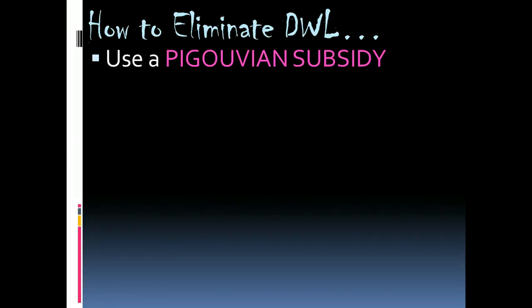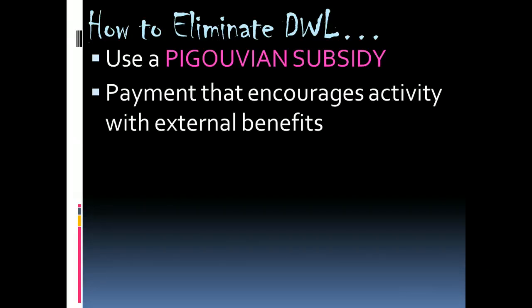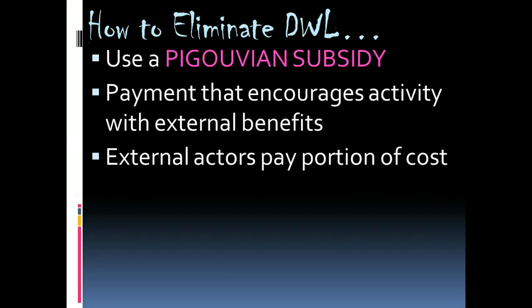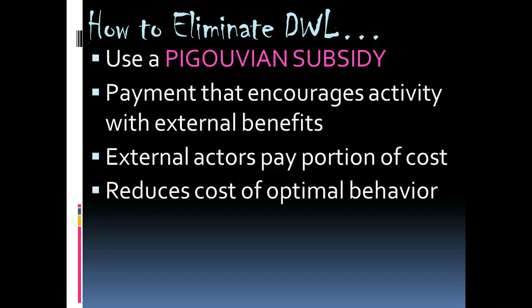To get rid of deadweight loss in the case of a positive externality, we can use a Pigouvian subsidy, named after economist Pigou. The subsidy encourages activity with external benefits — it says that to take action beneficial to society will cost you, the consumer, more than you were willing to pay. So an external actor, maybe the government, will pay a portion of your costs to encourage you to take this more beneficial behavior and create the positive externality, basically reducing the cost to the individual of pursuing optimal behavior.